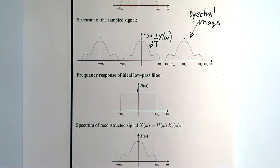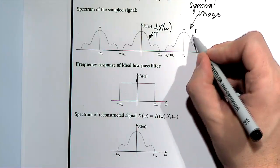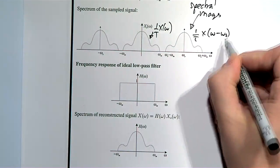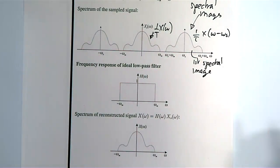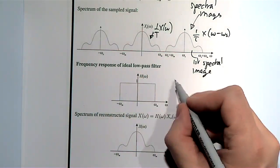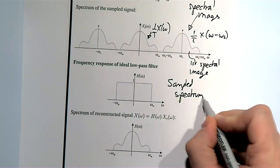Now, they're actually all scaled by a factor of 1 over t. This, for example, is the first spectral image, and it would be periodic. So the sampled spectrum is periodic.